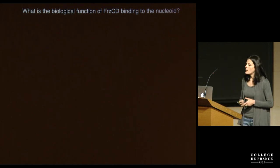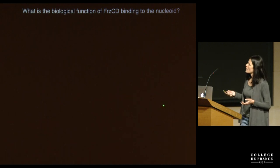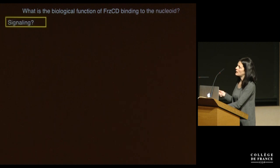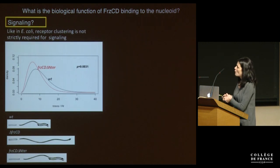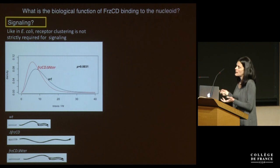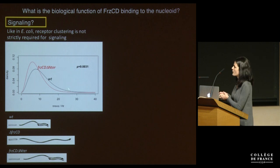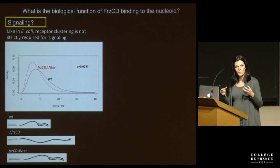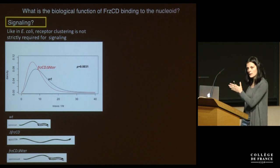The last question we wanted to answer was: what is the biological function of this DNA binding? First, we looked at how nucleoid binding affects signaling. We measured the reversal frequency of a strain incapable of both forming clusters and binding DNA. Cells have a slightly impaired reversal frequency compared to wild-type, but cells are still capable of reversing and the Frz activity is still capable of transducing signal. This was not surprising because, even in E. coli and other bacteria, it has been shown that chemoreceptor clustering is not strictly important for signaling, and receptor-CheA signaling units are still capable of responding to signals.